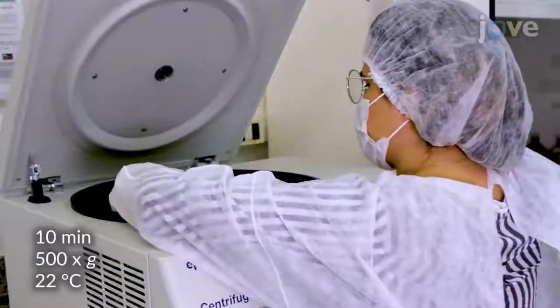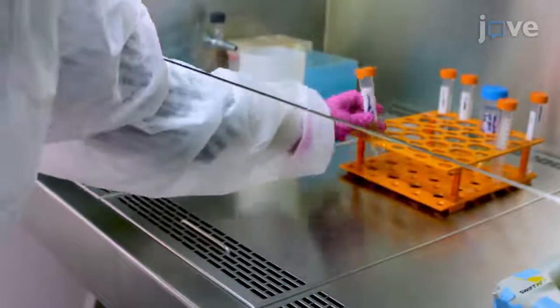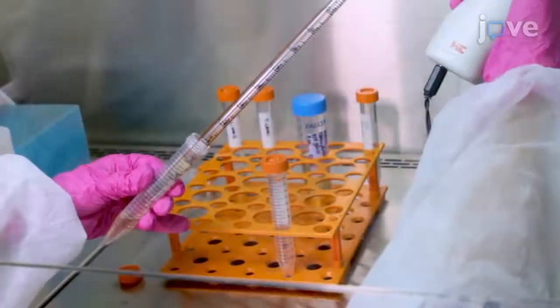Centrifuge the sample to lower cell debris, then place the tube at room temperature to allow the trypomastigotes to swim to the supernatant. After 10 minutes,